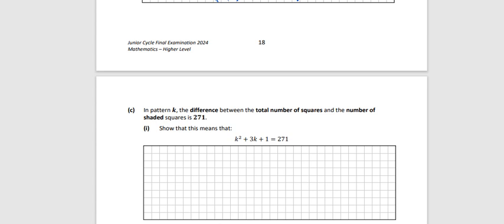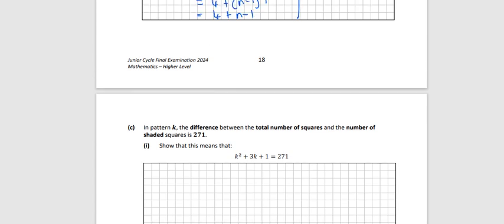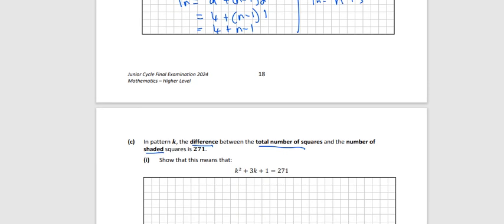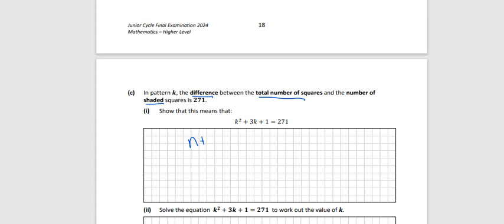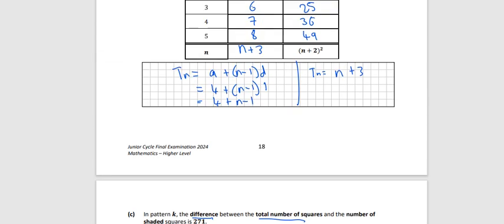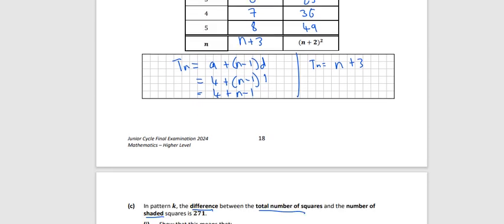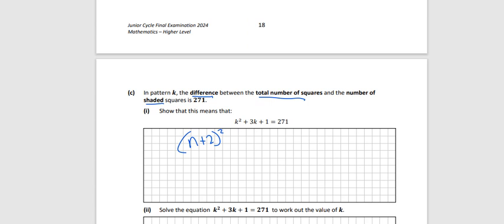Right, so part c is quite difficult then. It's the difference between the total number of squares and the number of shaded squares. So we know the general term for the total number of squares is n plus 2 squared. We know the nth term for the number of shaded squares is just n plus three.